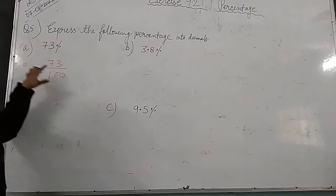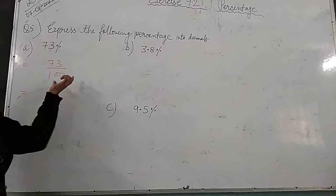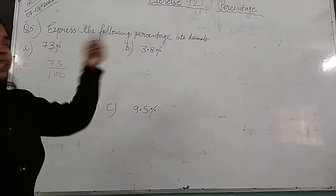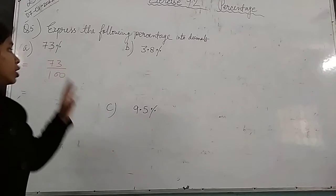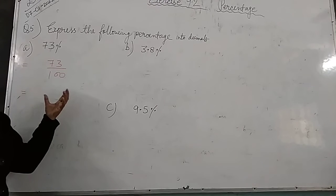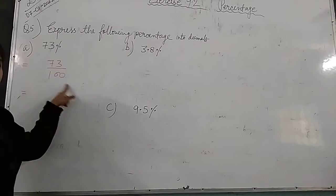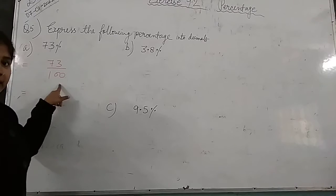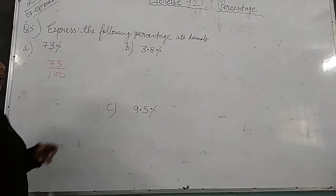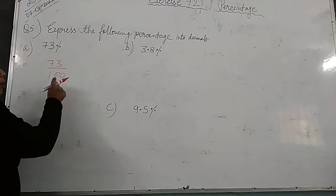If we divide 73 upon 100 and you all know when we study about the decimal chapter, you see the formula: if any term in denominator that is multiples of ten—that means in denominator ten, hundred, thousand, ten thousand—so how do we write this in decimal form?